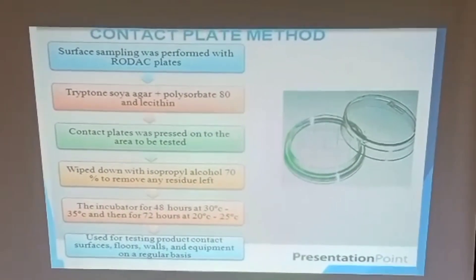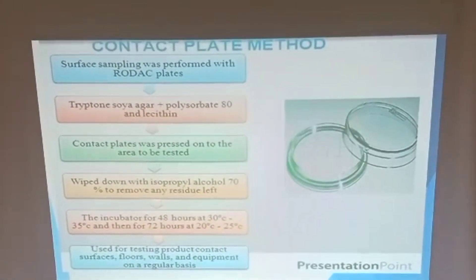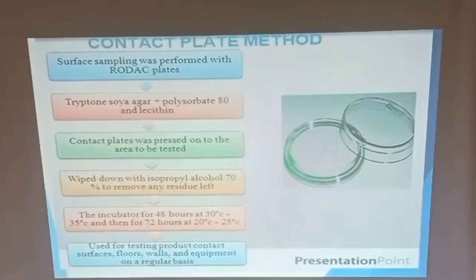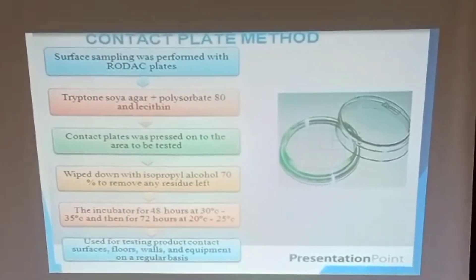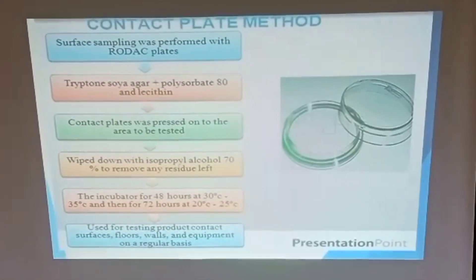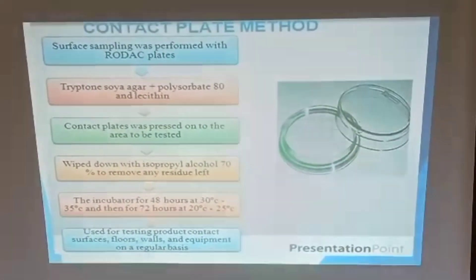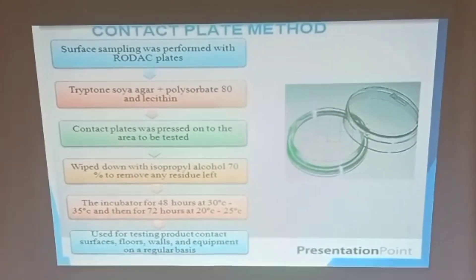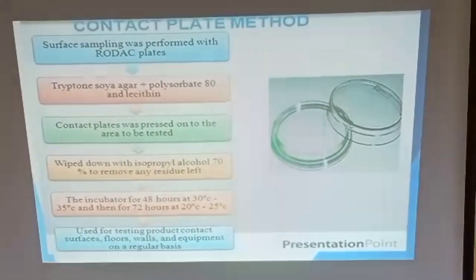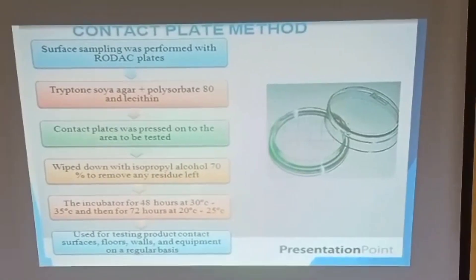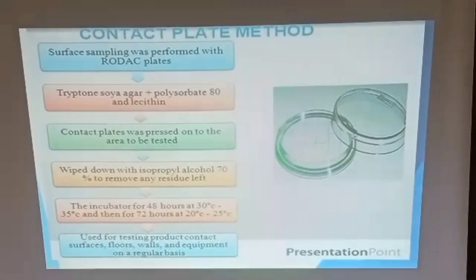The contact plate method uses a specialized plate — called a rodent plate — coated with a selective medium inside. The medium for the agar contains tryptone soybean agar and Polysorbate 80, also called Tween 80, which acts as a selective agent. Contact plates are pressed onto the area to be tested.